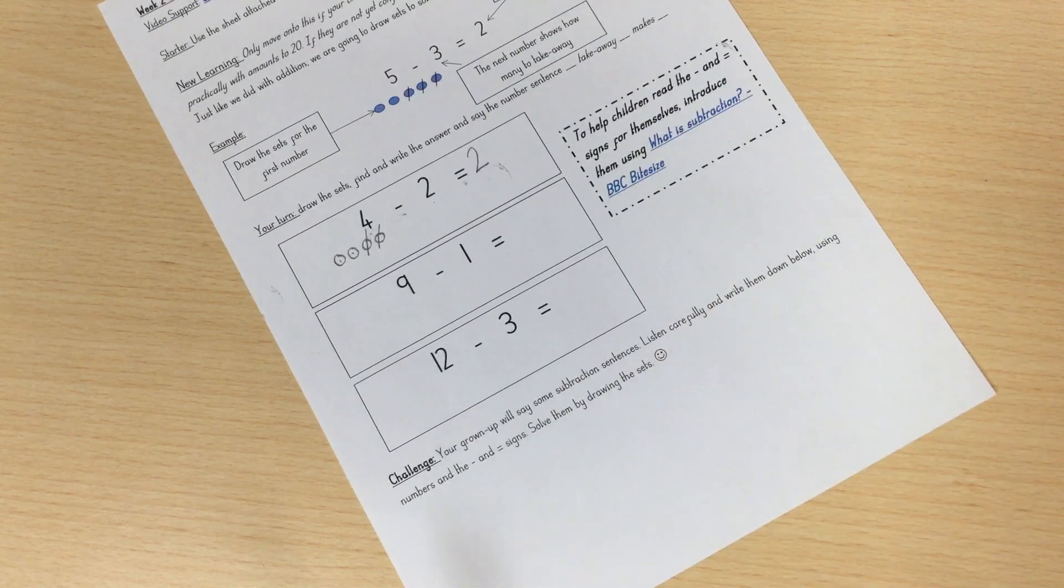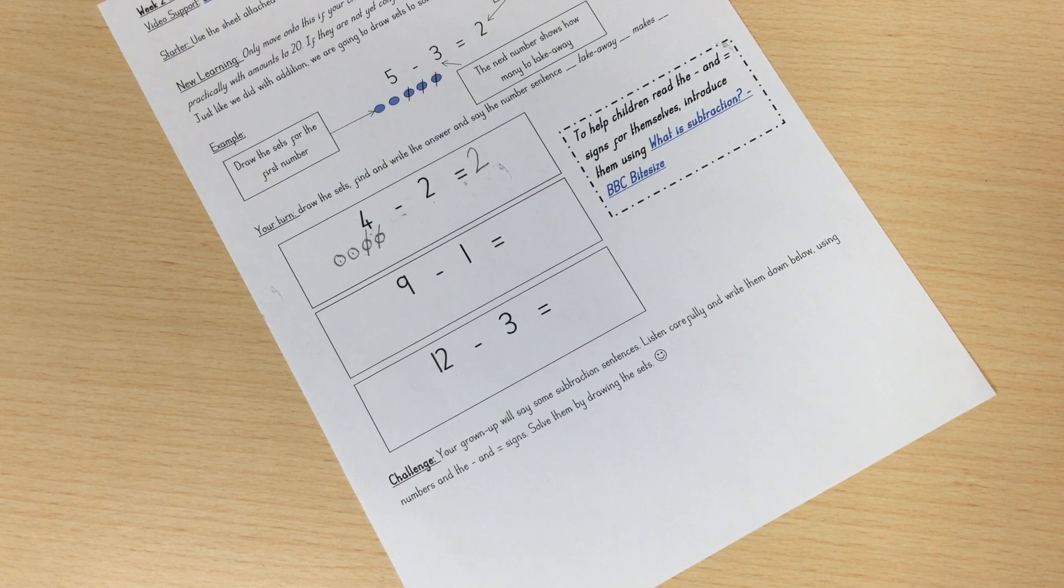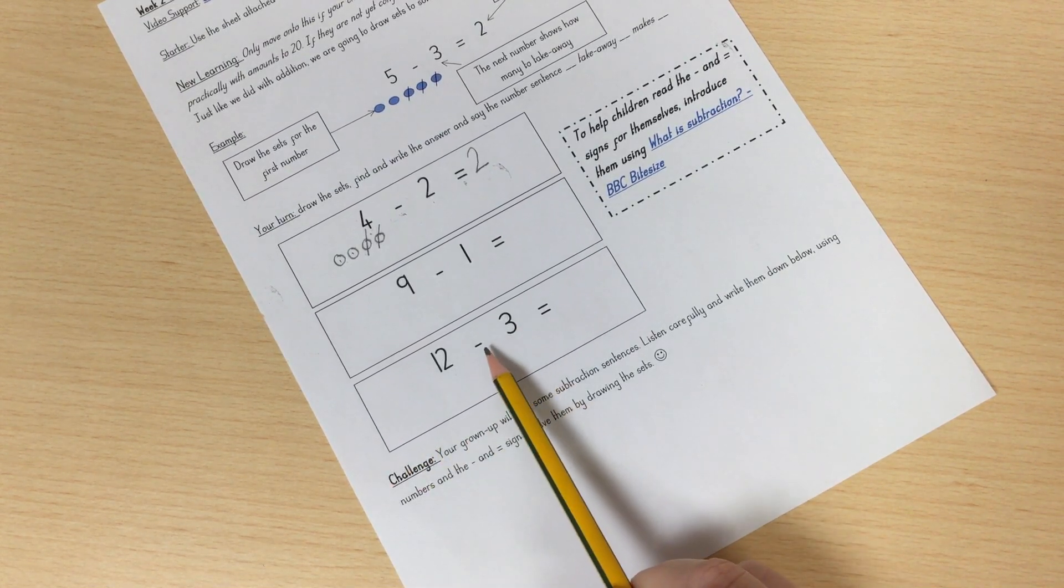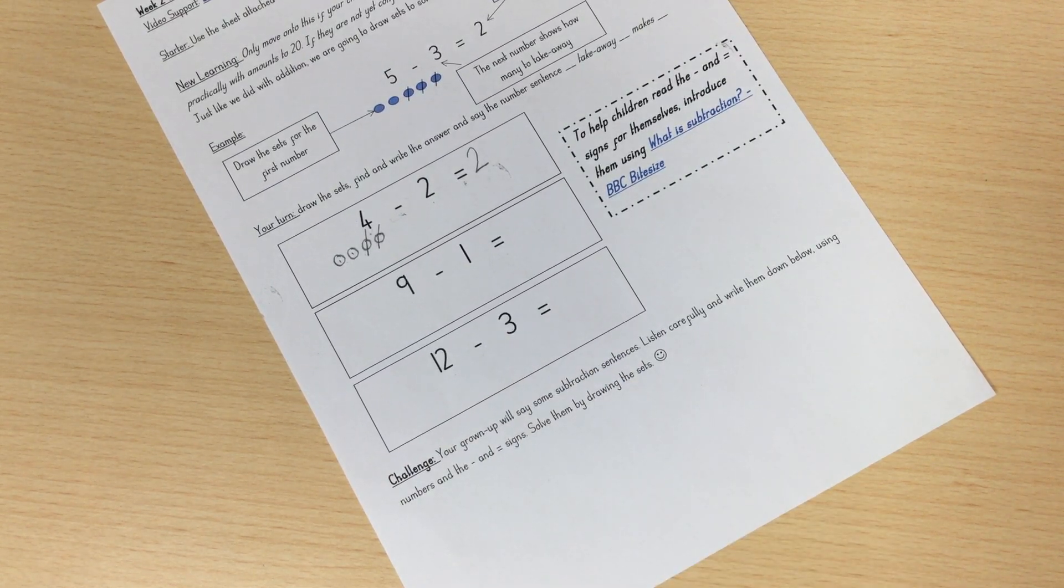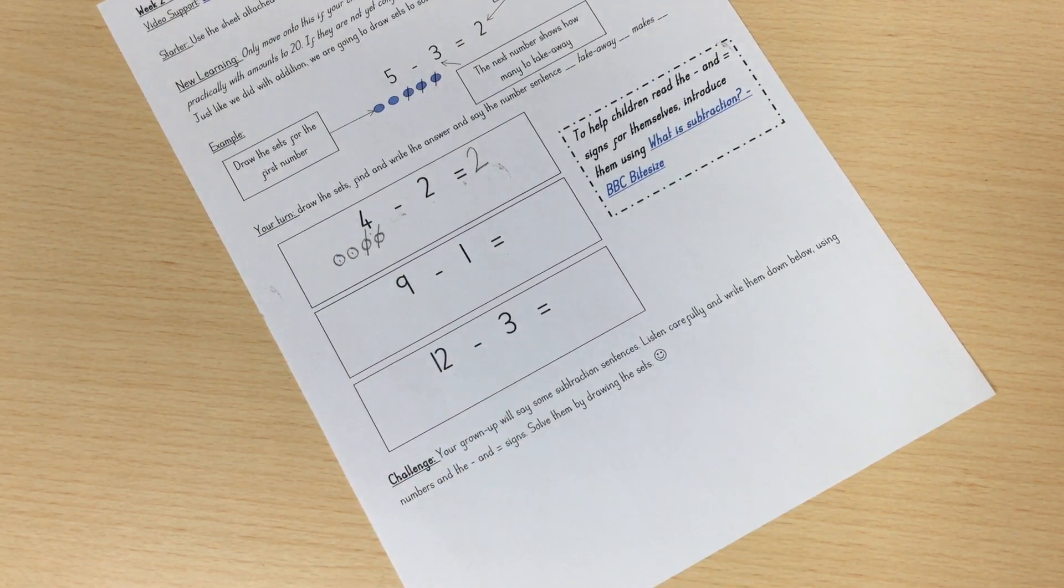Here, or on the back of your paper, you're going to write some take away sentences that your grown-up says. They're going to say the numbers and take away and equals. That's what you need to use in your sentences. When you've written the number sentence, you then need to solve it by drawing the sets.